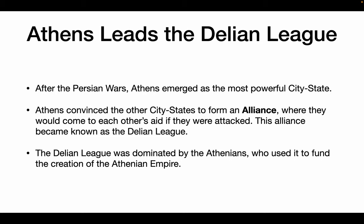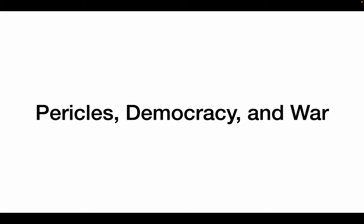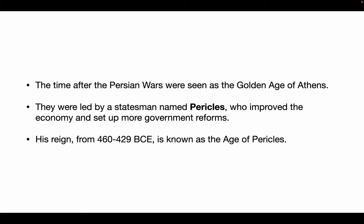After the Persian Wars, Athens was the dominant city-state and convinced the other city-states to create an alliance — known as the Delian League — where they would band together if they were ever attacked. The Delian League was dominated by the Athenians, who used it to help create what is called the Athenian Empire. This is also the time of the age of Pericles — the time after the Persian Wars was seen as the golden age for Athens. A guy named Pericles was in charge of Athens, and he improved the economy, set up governmental reforms, and he lasted from 460 to 429 BCE, which is known as the age of Pericles.